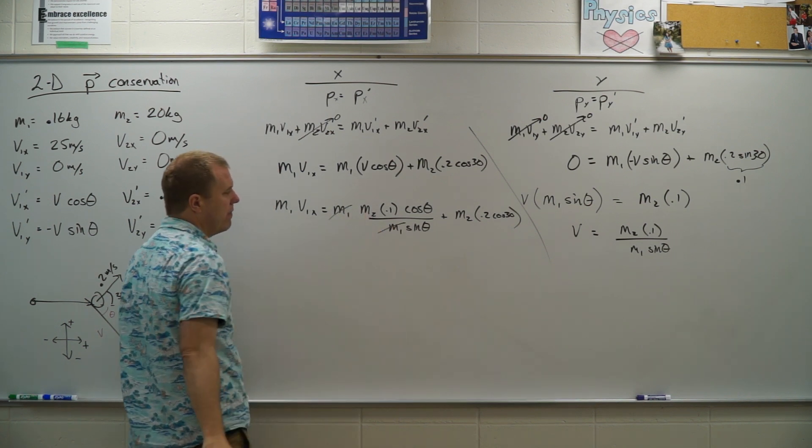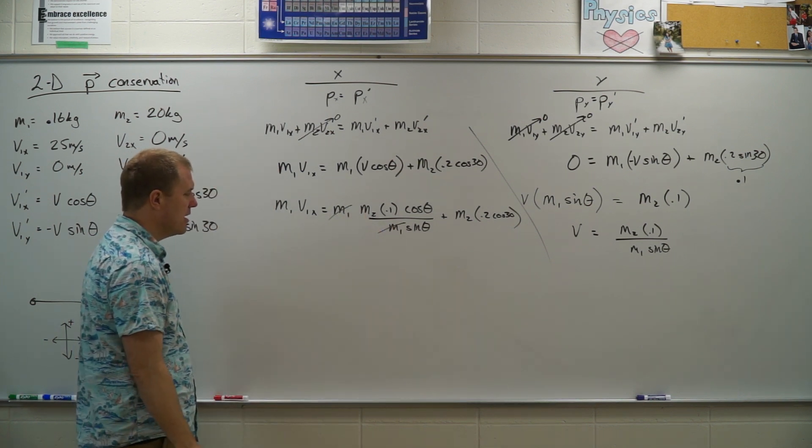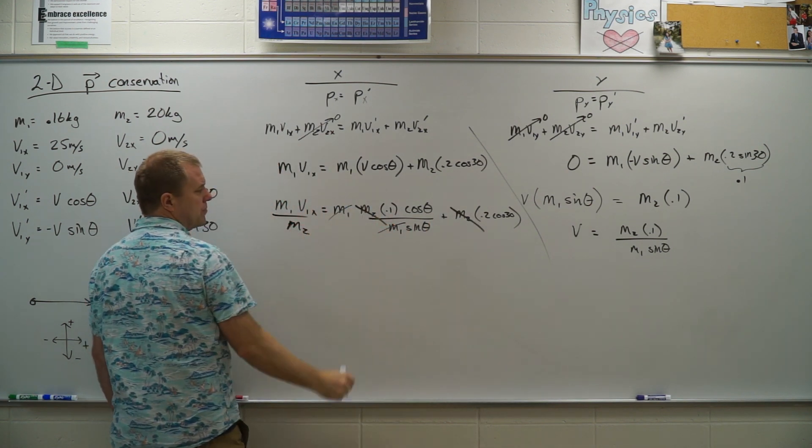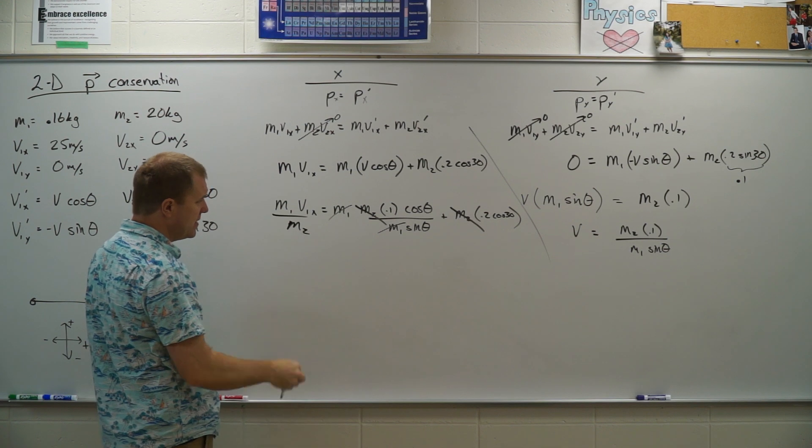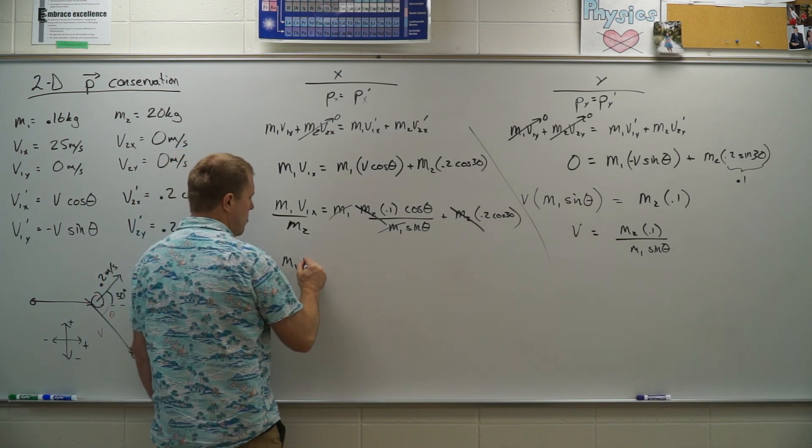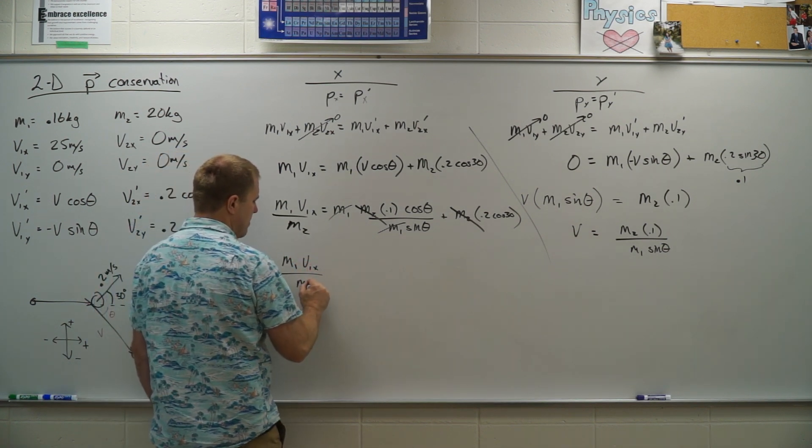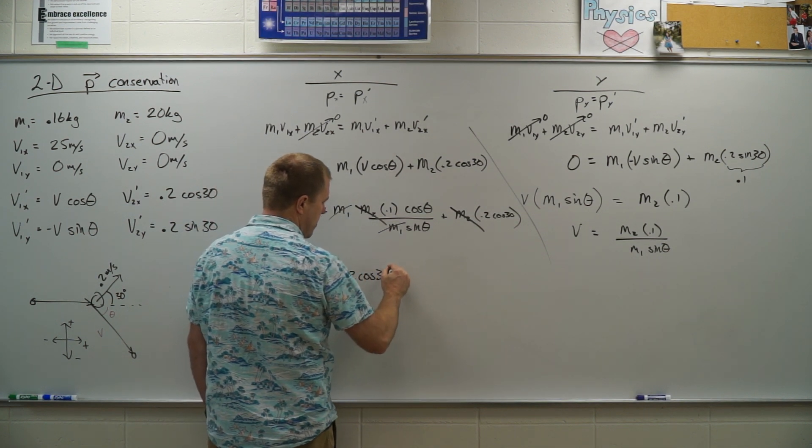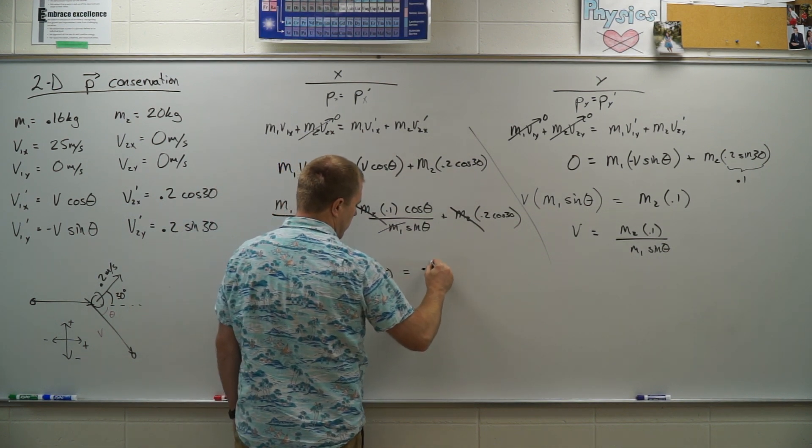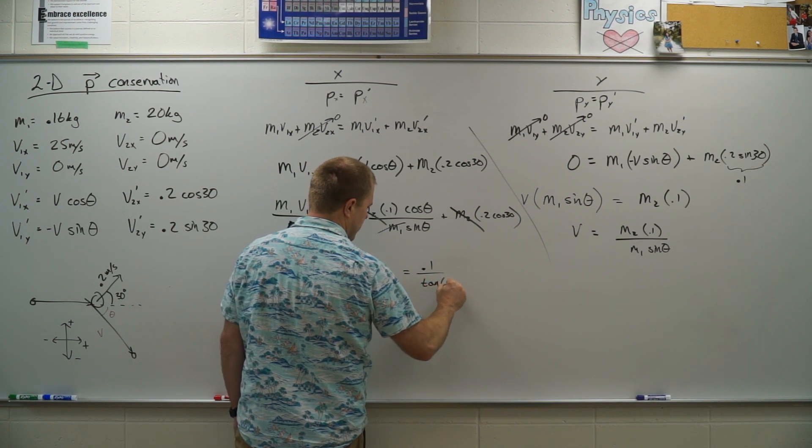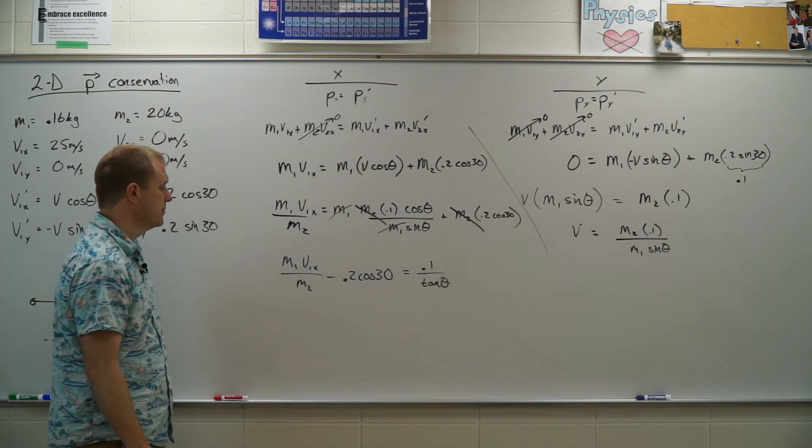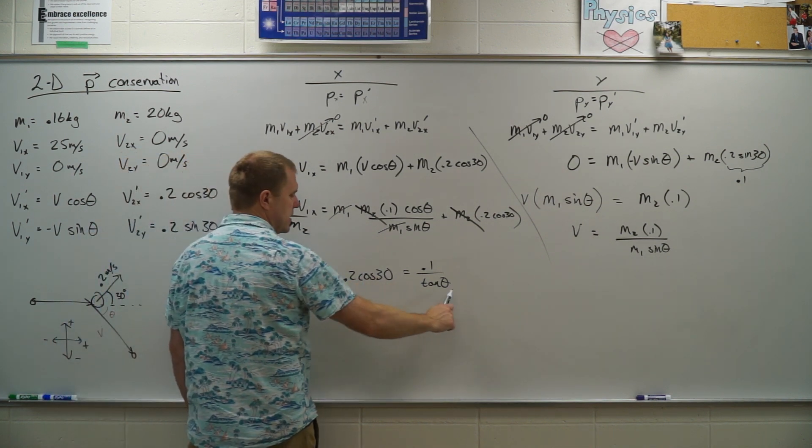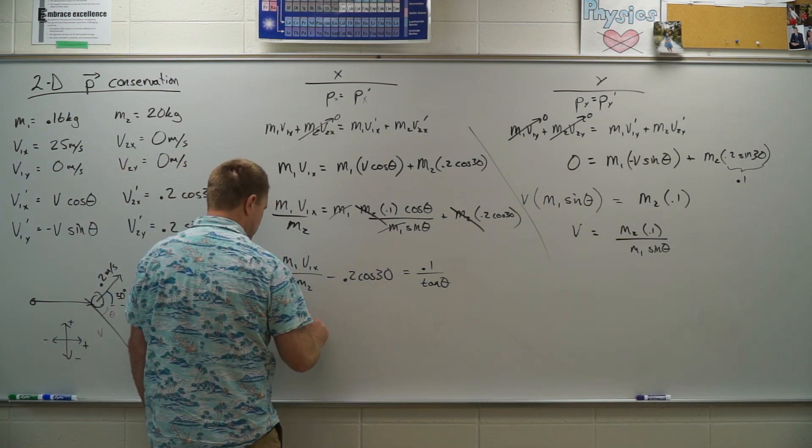So let's get rid of that M1 there, make that a little easier on us. Let's divide everything by M2. Okay, and then let's solve. So now I have M1 V1X divided by M2 minus 0.2 cosine 30 equals 0.1 divided by the tangent of theta. So I'm just going to dump all this stuff in the denominator there, and take the inverse tangent.